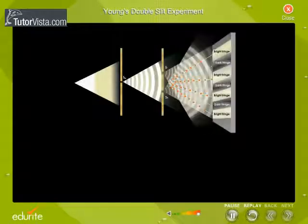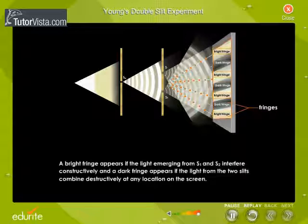What causes bright and dark fringes? A bright fringe appears if the light emerging from S1 and S2 interfere constructively, and a dark fringe appears if the light from the two slits combine destructively at any location on the screen.